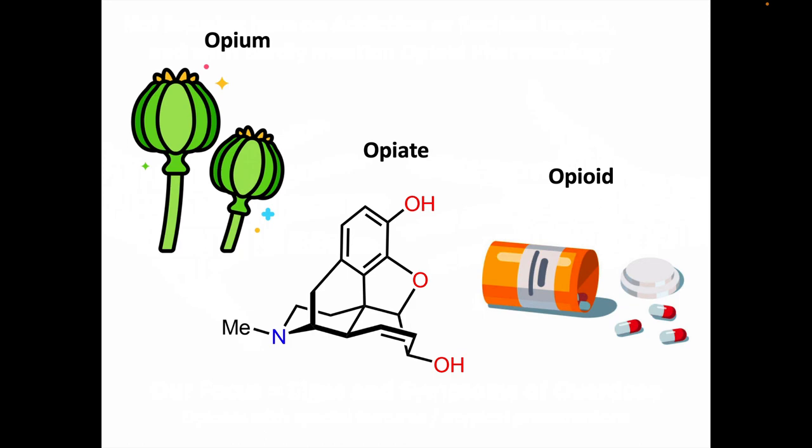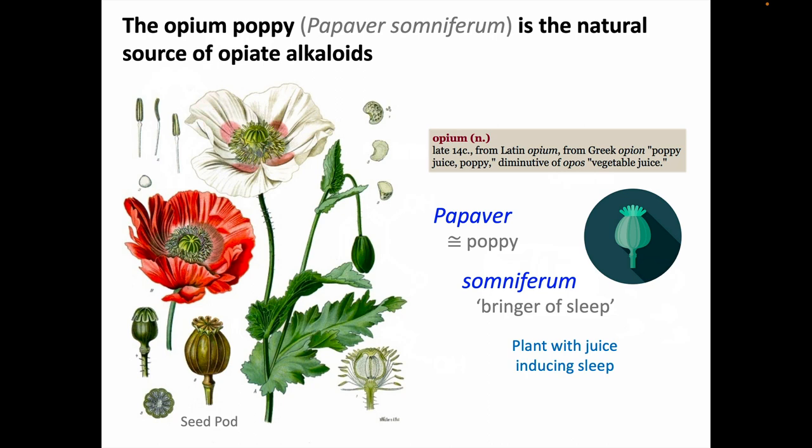We'll start off by defining and differentiating opium, opiate, and opioid. The opium poppy is the natural source of opiate alkaloids. Opium comes through Latin from the Greek 'opion', meaning a poppy or poppy juice. The scientific name for the opium poppy, Papaver somniferum, therefore literally means the plant with juice that induces sleep.